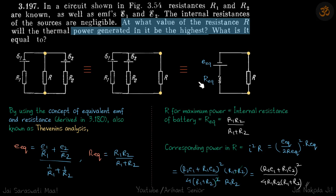With Thevenin's analysis we can say E equivalent for the system is E1 by R1 plus E2 by R2, divided by this. And R equivalent, since both are in parallel, will be this.